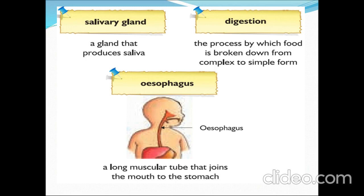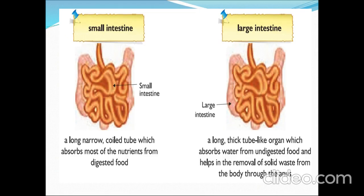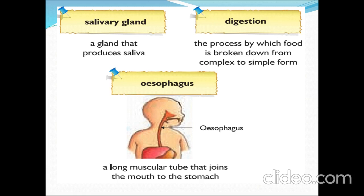What are the new words we learned in this lesson? We learnt about salivary gland, digestion, esophagus, small intestine, and large intestine. The salivary gland is the gland that produces saliva. Digestion is the process by which food gets broken down into simple form in order to produce energy.